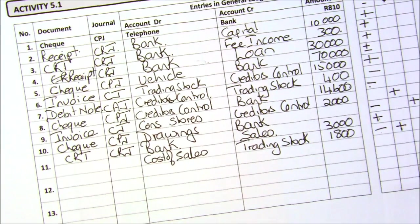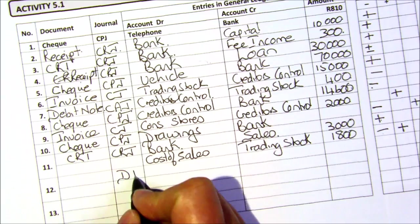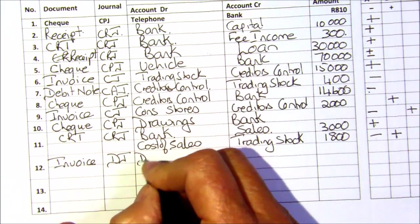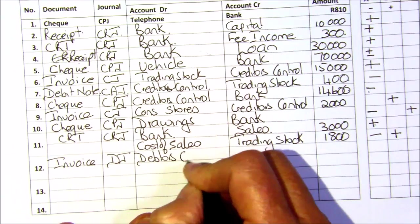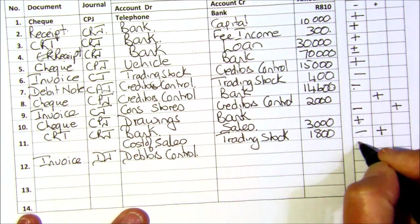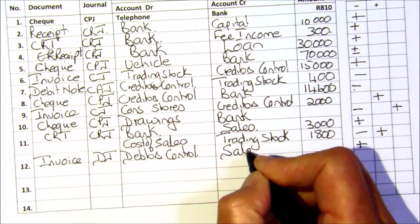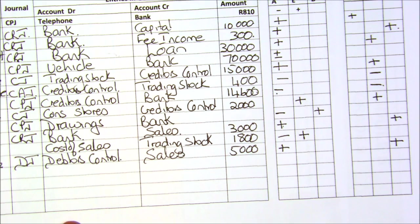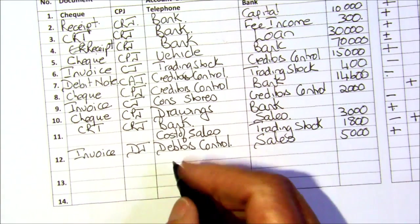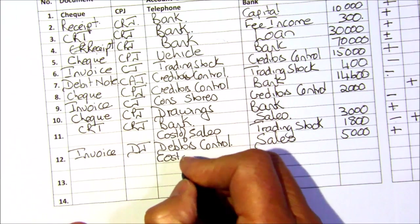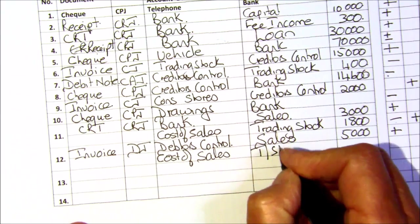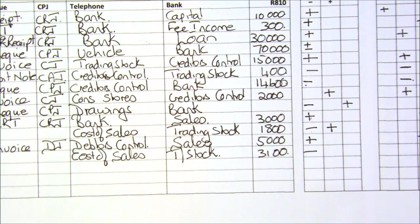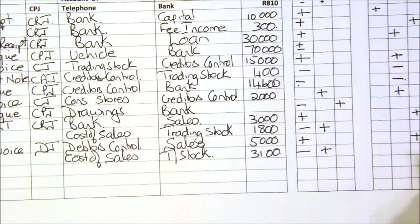On number 12, exactly the same, but you're selling on credit. When you sell on credit, it's your debtors' journal, and there's an invoice. You can't use bank now — you're going to have your debtors' control, which is an asset to you, so your assets are going up, for the sales amount of 5,000. Sales is an income, so your income is increasing. But again, with every selling price there's got to be a cost price — same entry: cost of sales and trading stock, but a lower amount of 3,100. Your trading stock is decreasing because you're selling, but the amount of your expenses is going to increase.